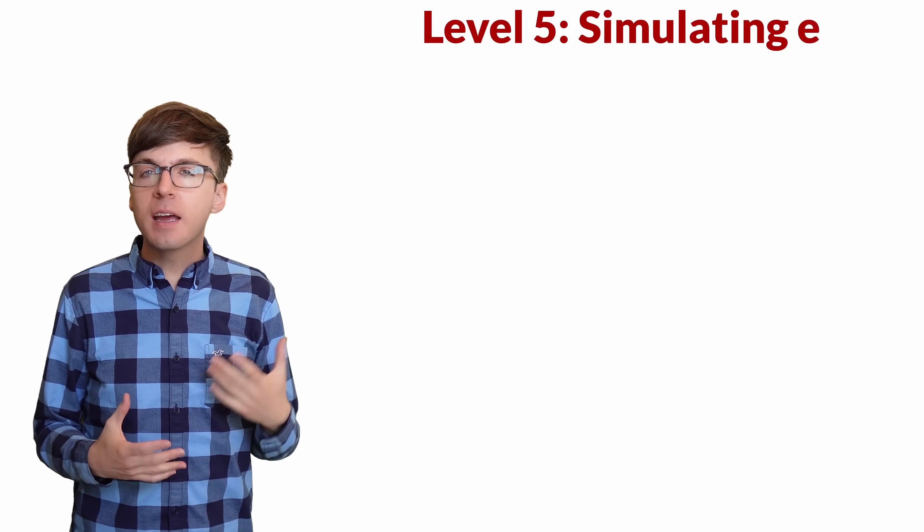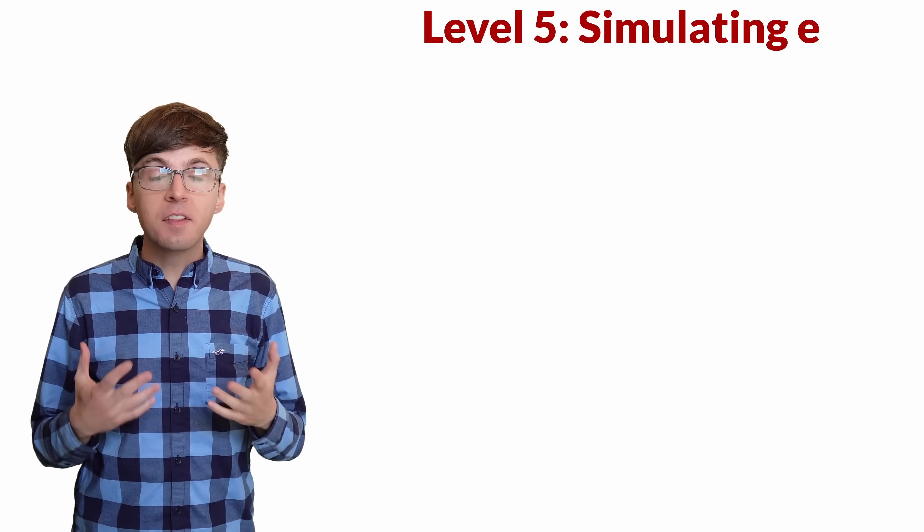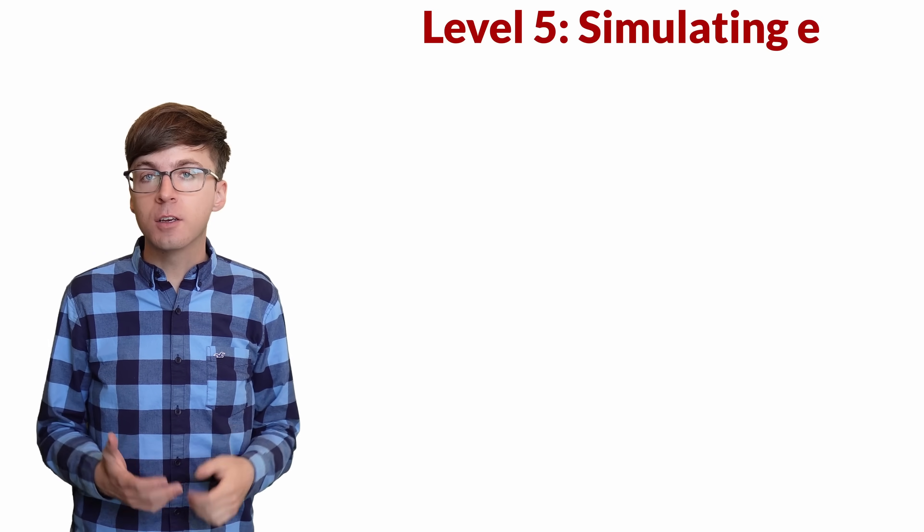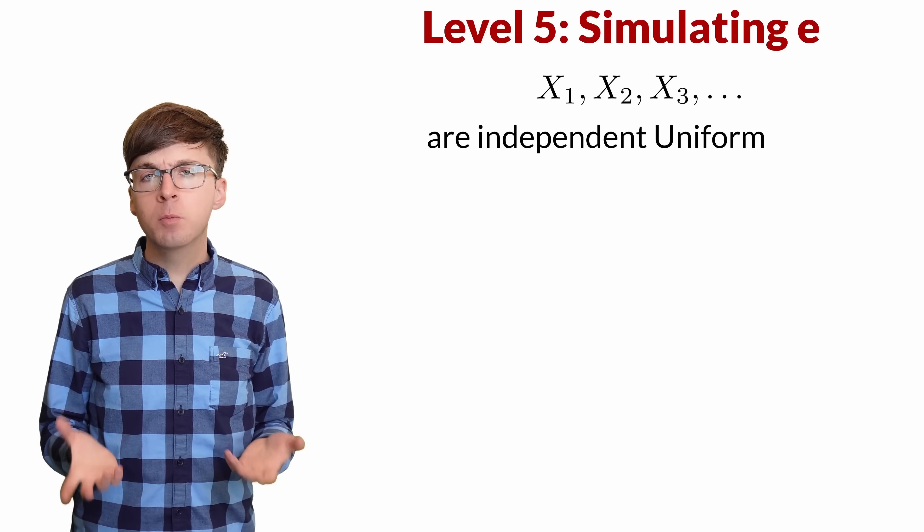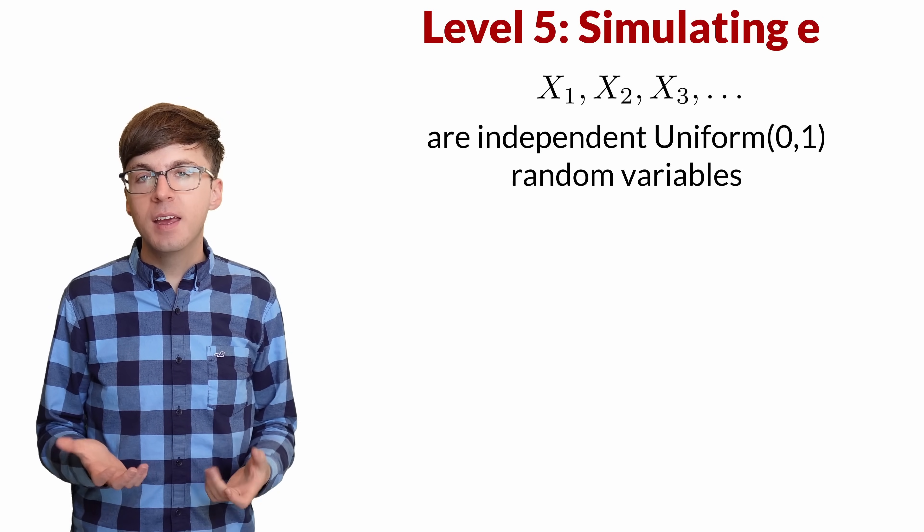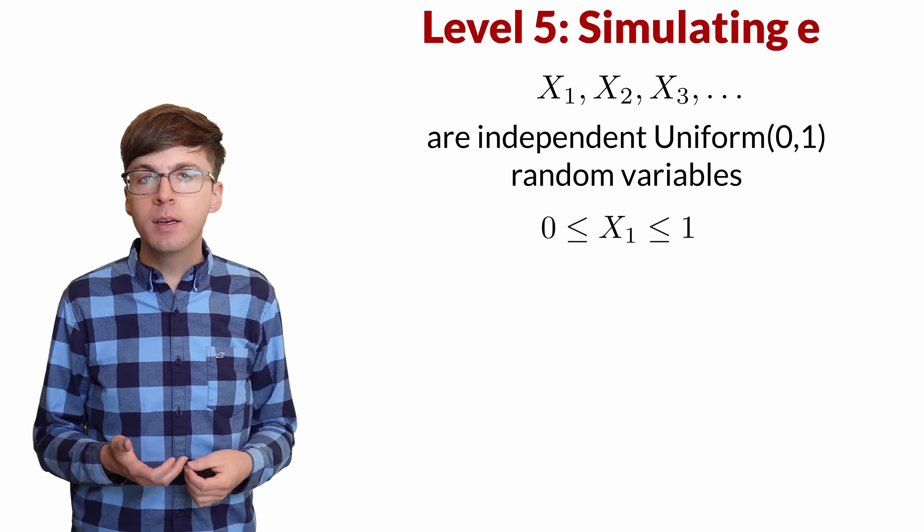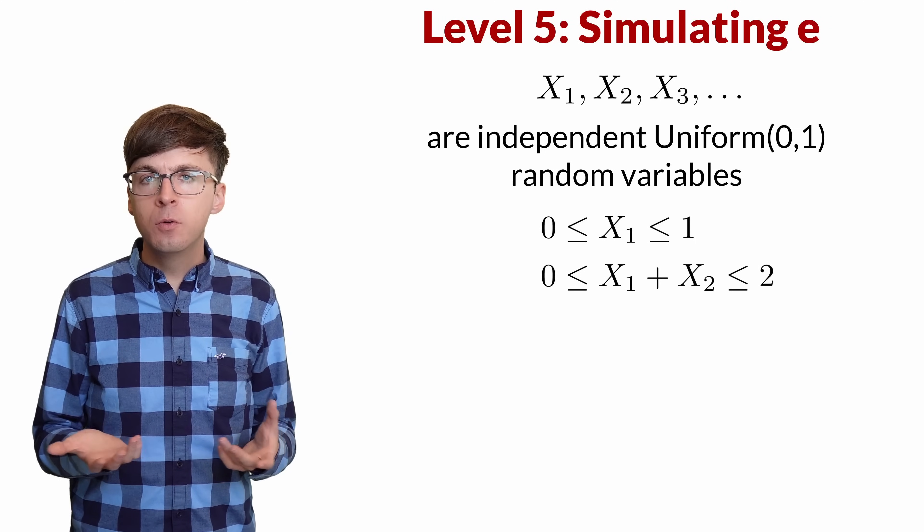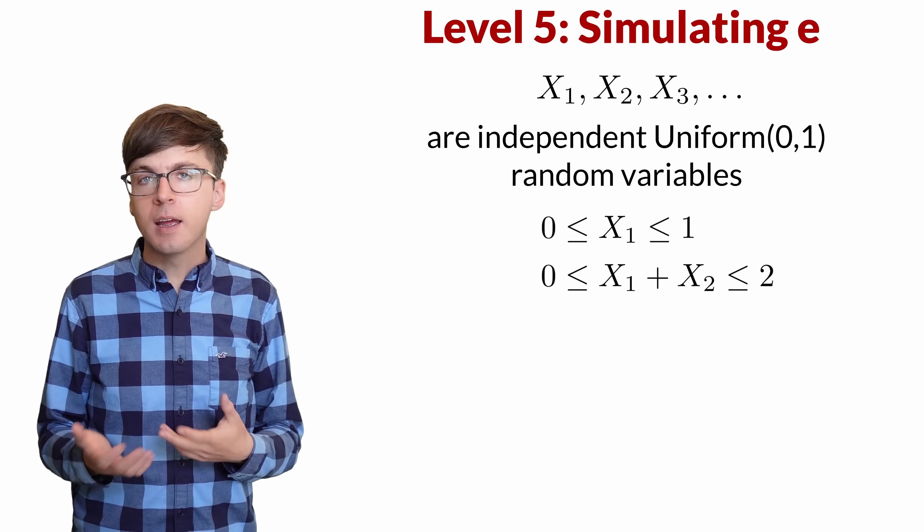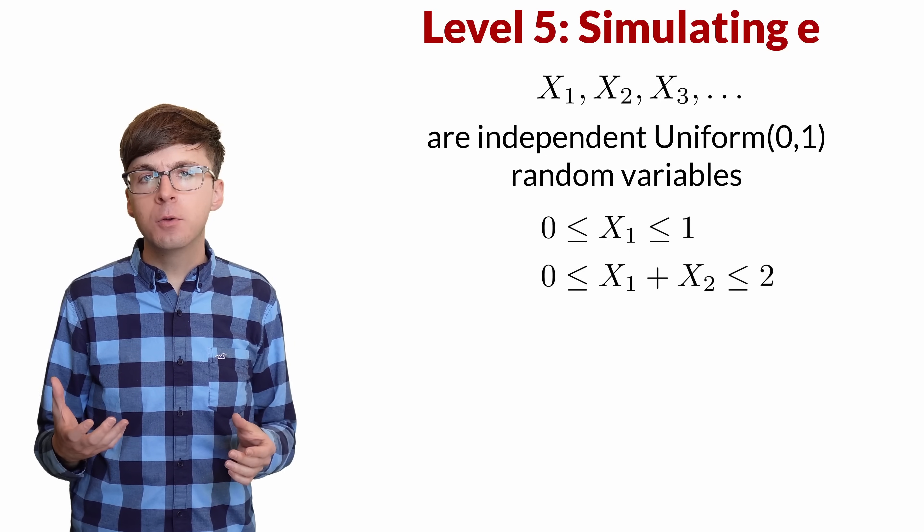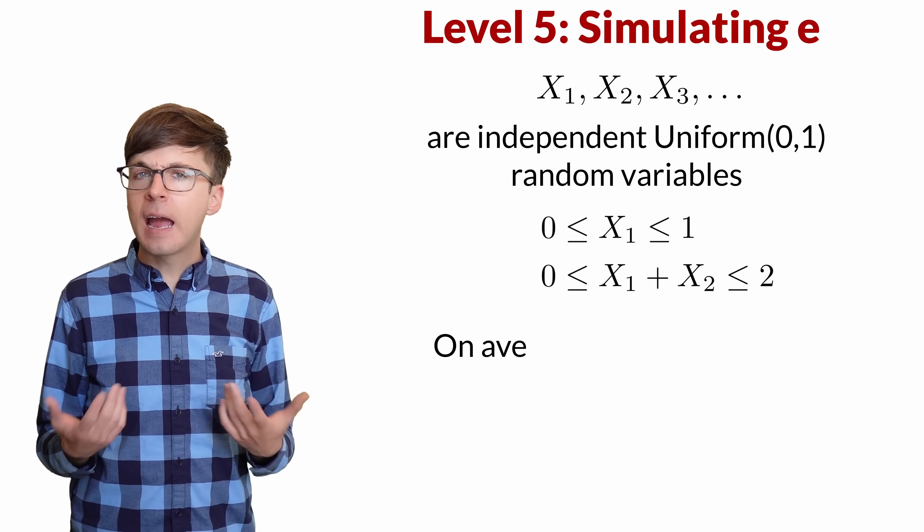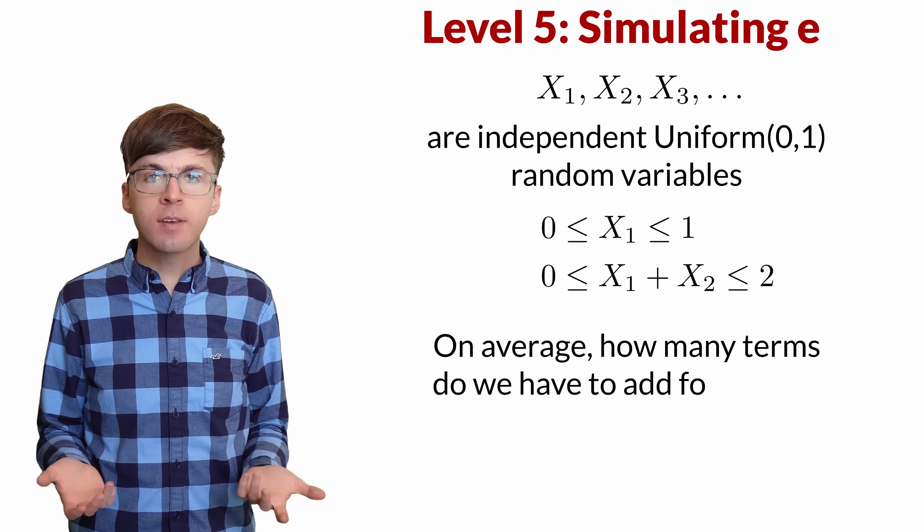For level 5, let's look at another probability question that lets us easily simulate the value of e. Say we start with independent random variables, each chosen uniformly between 0 and 1. x1 is between 0 and 1, and then x1 plus x2 is between 0 and 2, and so on. Eventually, we'll add up enough of these values to get a sum greater than 1. On average, how many terms is it going to take?